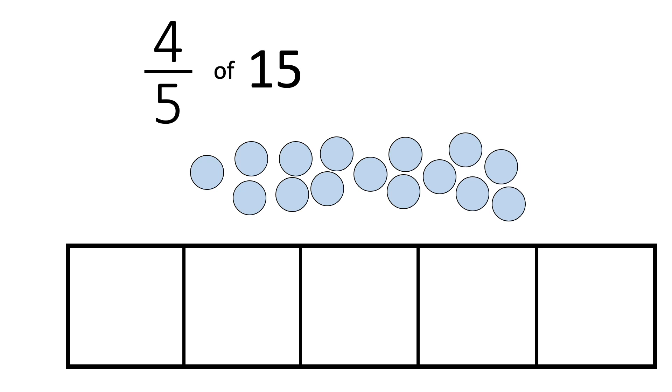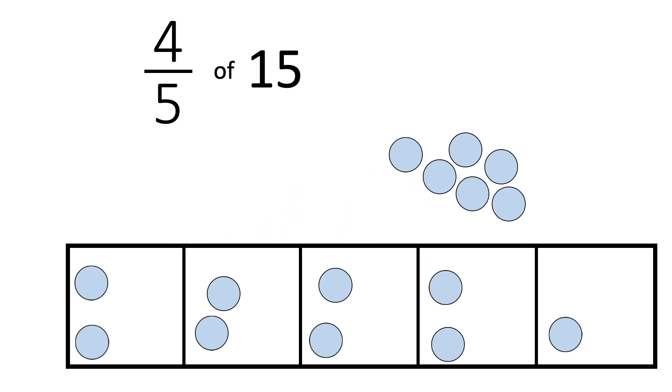And we'll split these fifteen counters into our five equal pieces. Making sure we put the same amount in each section. And now we can see that one-fifth of fifteen must be three. But we need four-fifths.